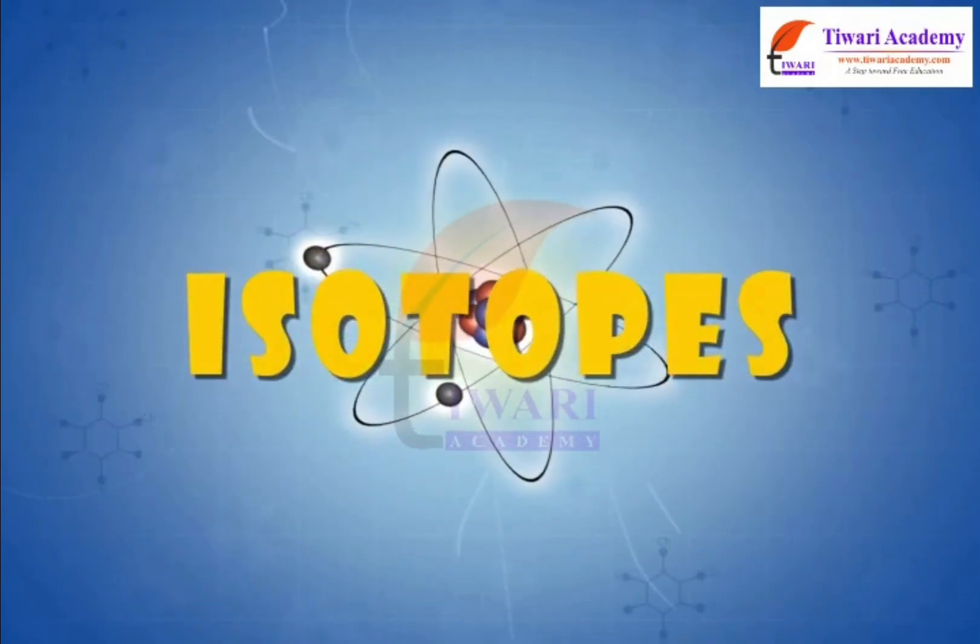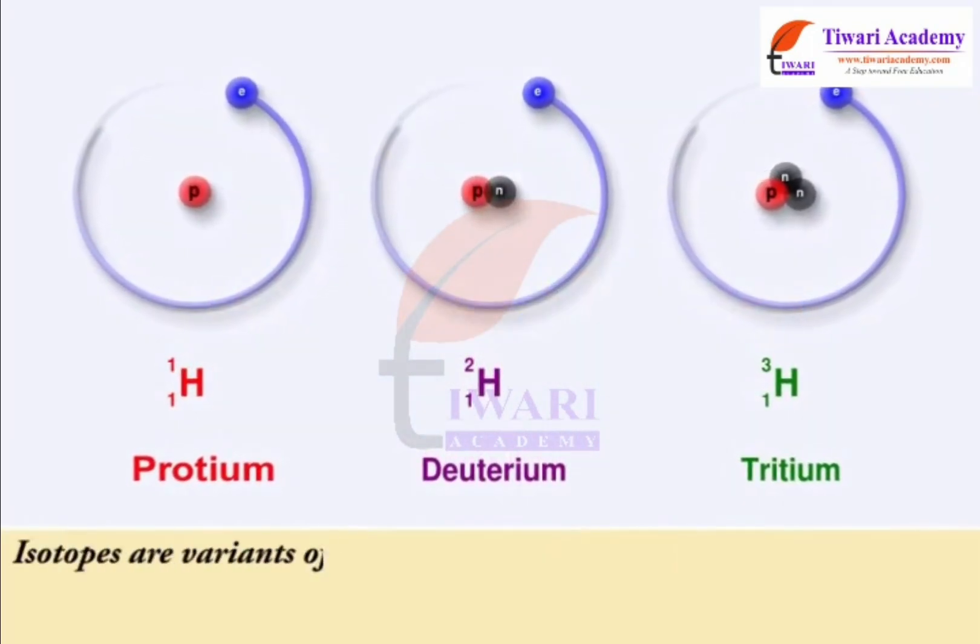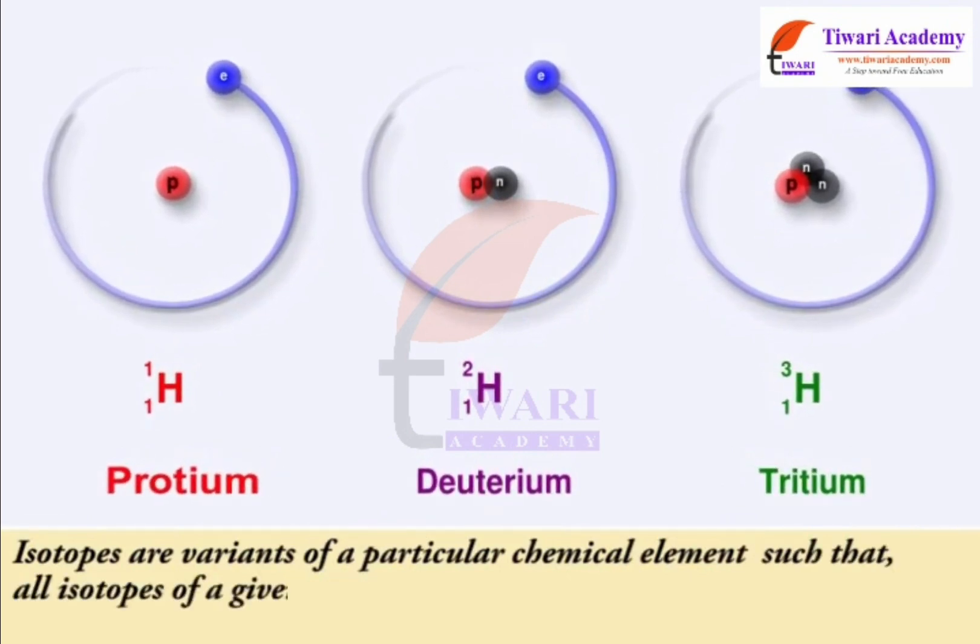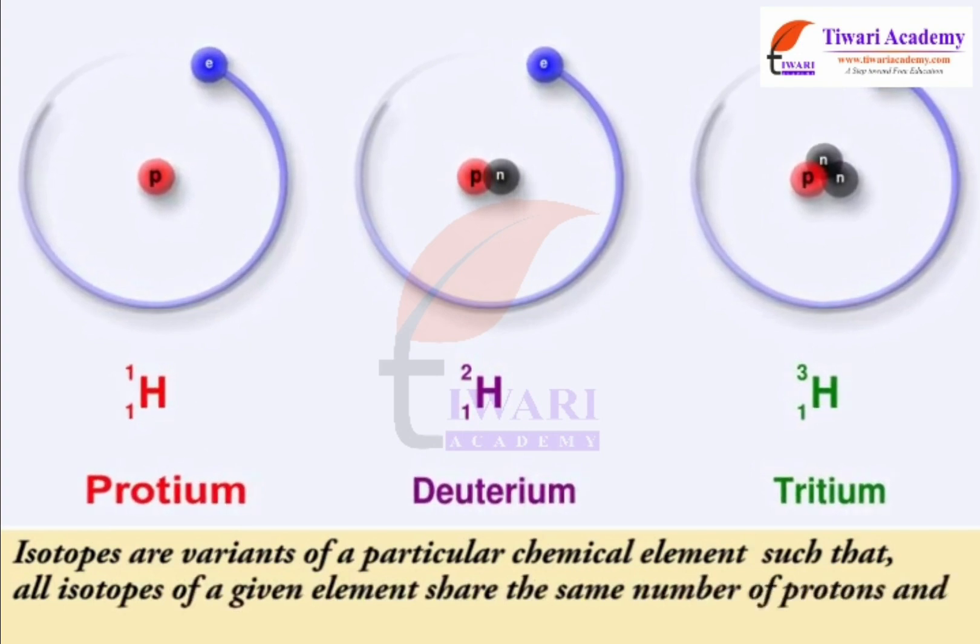Isotopes. Dear students, isotopes are variants of a particular chemical element such that all isotopes of a given element share the same number of protons and electrons.